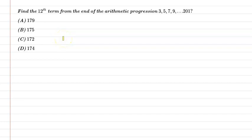Hello friends. First of all, let us understand the question. The question is: find the 12th term from the end of an arithmetic progression that is 3, 5, 7, 9, and so on up to 201. So let's start.